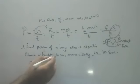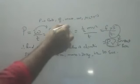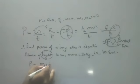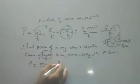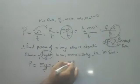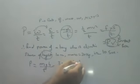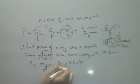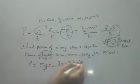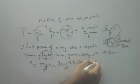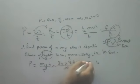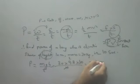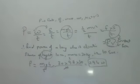Since height and mass are given, we use power equals mgh by t. Mass is 30 kg, g is 9.8, height is 10 m, and time is 10 seconds. The 10s cancel, giving 30 × 9.8 = 294 watts. The answer is 294 watts. If you want the answer in horsepower, divide 294 by 746.